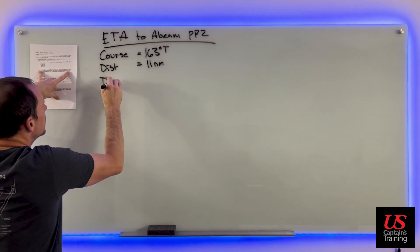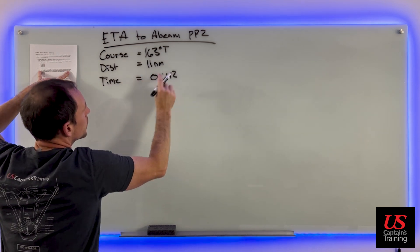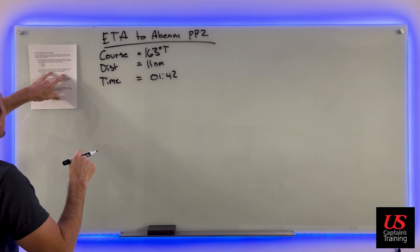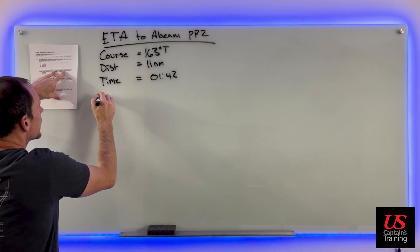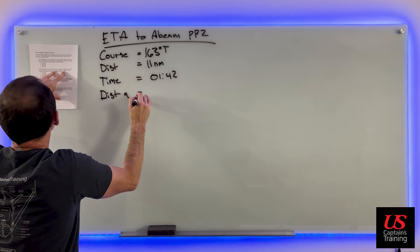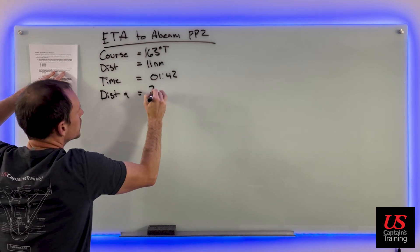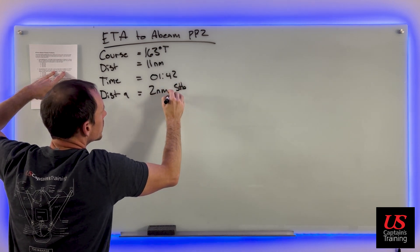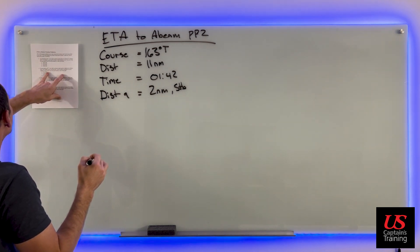It gives us a time - we pick that light up at 11 miles at 0142, so the time is 0142 (one hour 42 minutes). You change course to pass the light at two miles off abeam to starboard, giving us our second distance, distance a, which is two nautical miles to starboard.